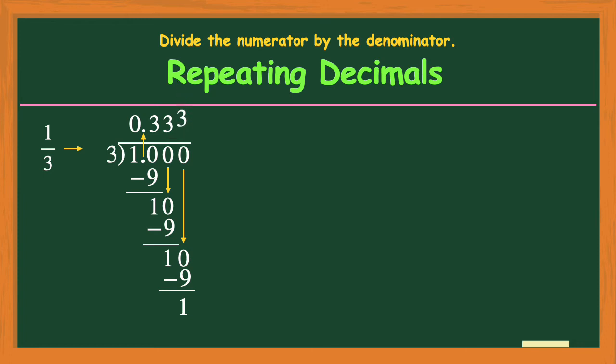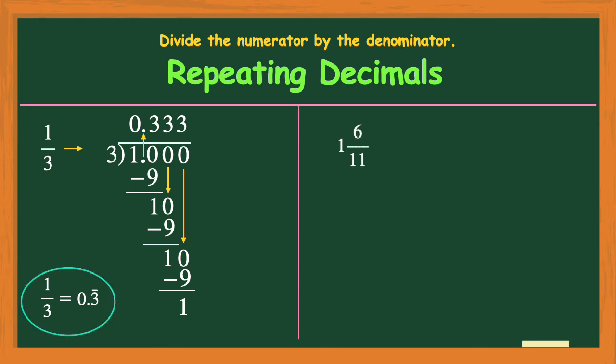There is a way to write that repeating pattern in the answer. One-third equals 0.3 with a bar on top of that three. That bar is a notation that says this three keeps repeating forever and ever. Now let's take a look at a mixed number.